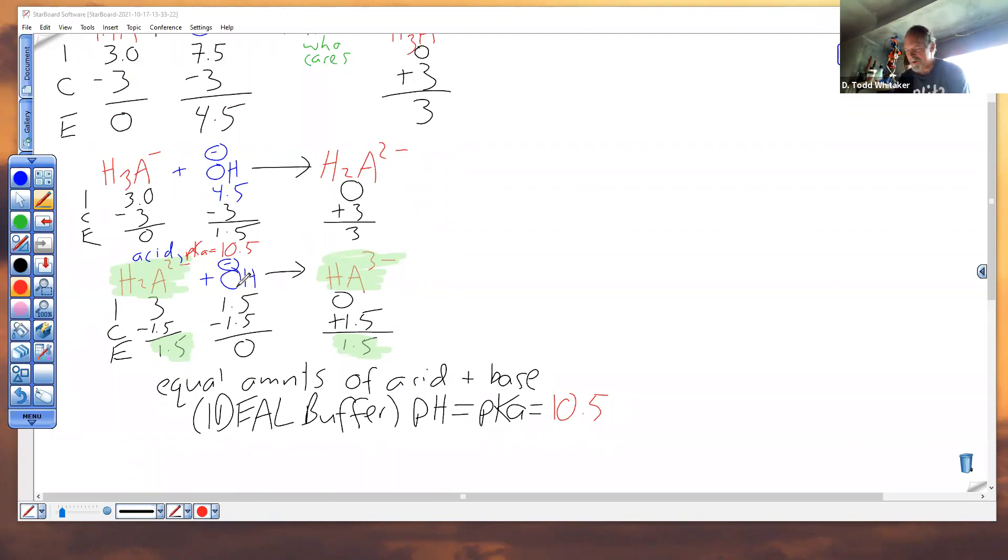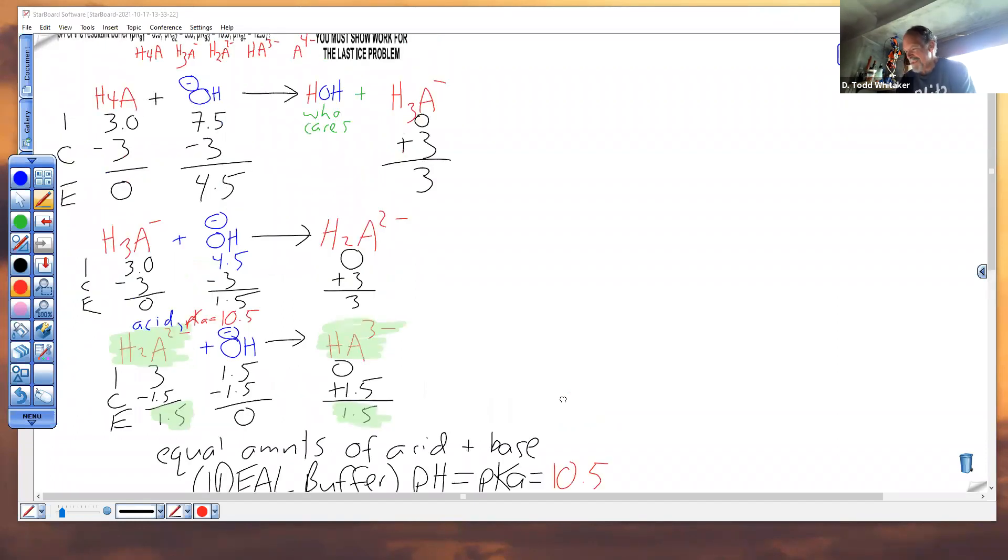Going the other direction, if we were using a strong acid, and I always seem to use HCl, you'd be done after HCl ran out. And we ended this one with an equal amount of the acid and the base of this pair, and that was exactly equal to pKa. So what I'll do is I'll just post this one, and if you have any questions about the video, email me right away.